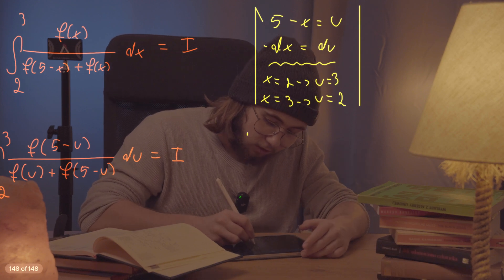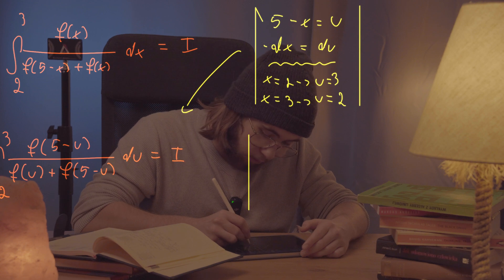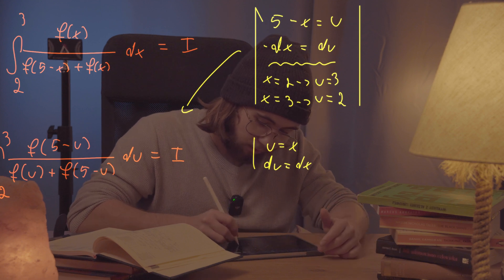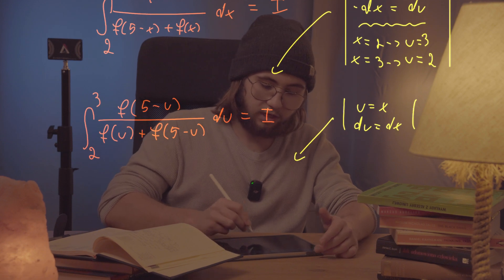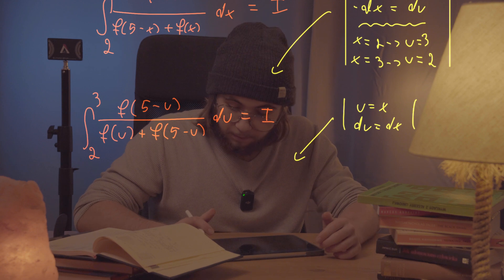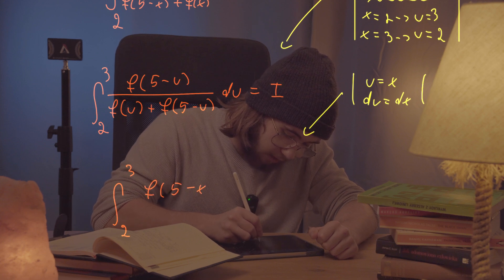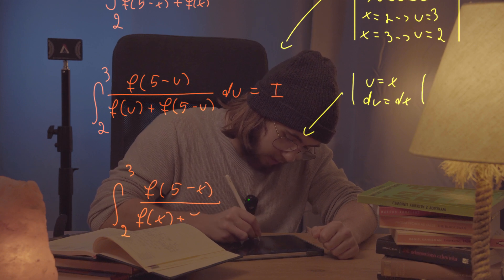So let's just change the dummy variable u back to x — since u is just a dummy variable it doesn't change the value of the integral. That gives us the integral from two to three of f of five minus x over f of x plus f of five minus x dx.